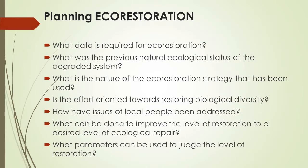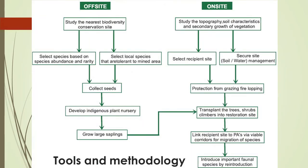If we look at the implementation angle, there are off-site and on-site aspects. Off-site, many people always ask 'what should I plant?' The best way is to go to your closest protected area and do a species survey of the trees, shrubs, climbers, and ground flora that are there, and try to bring all those back. To do that off-site, you have to collect seeds and develop an indigenous tree nursery, which then brings you to a seedling stage you can transport back into your site.